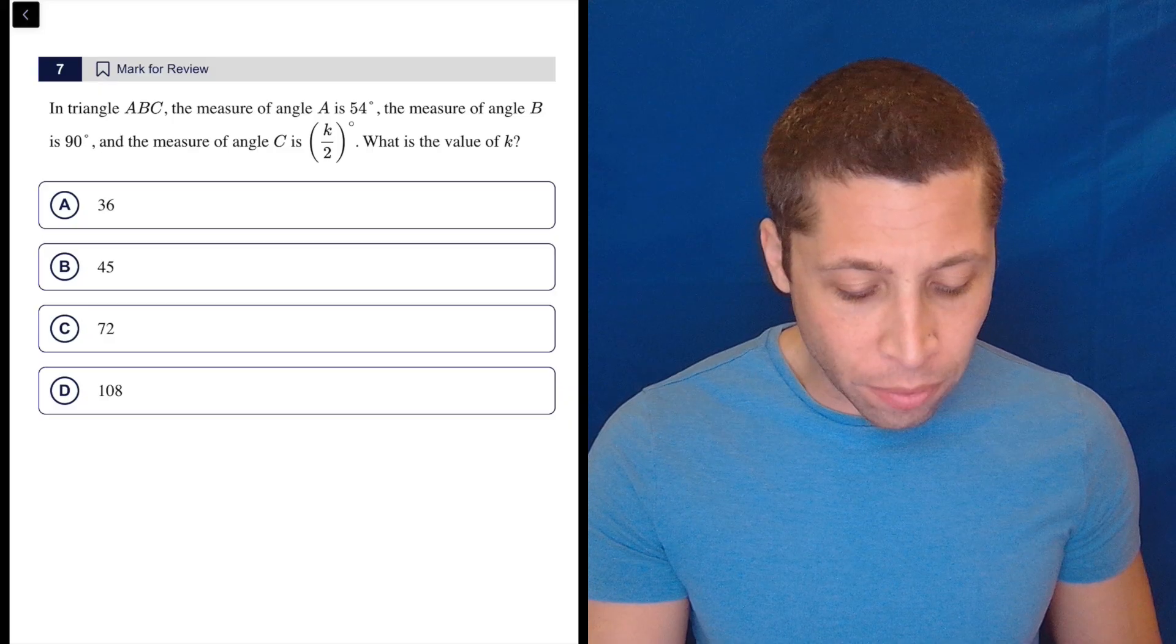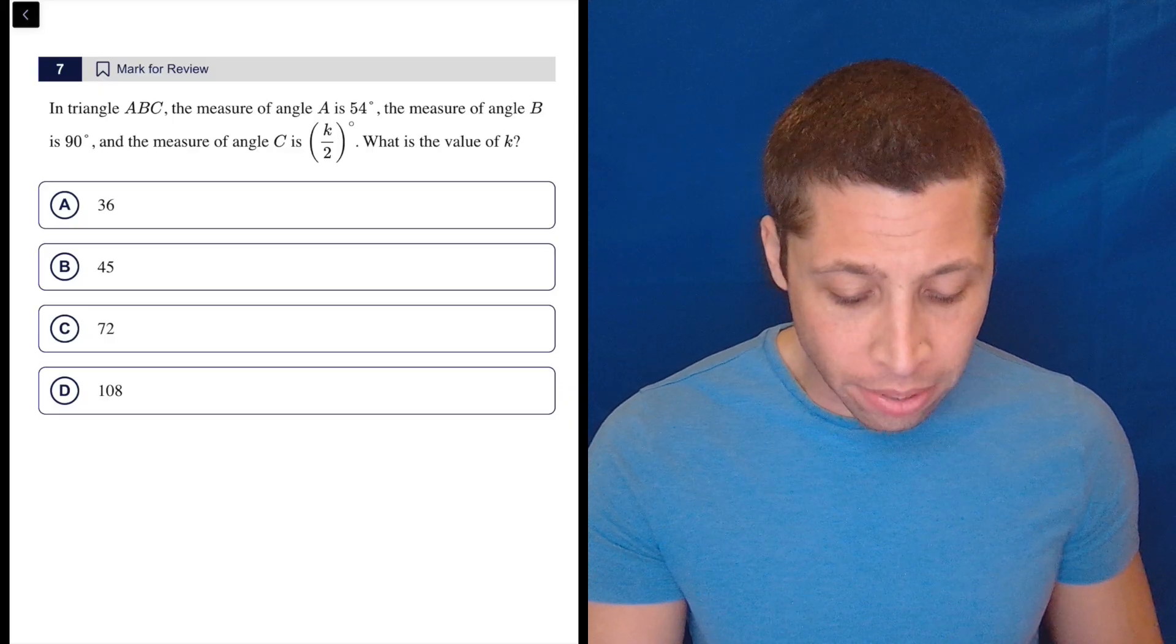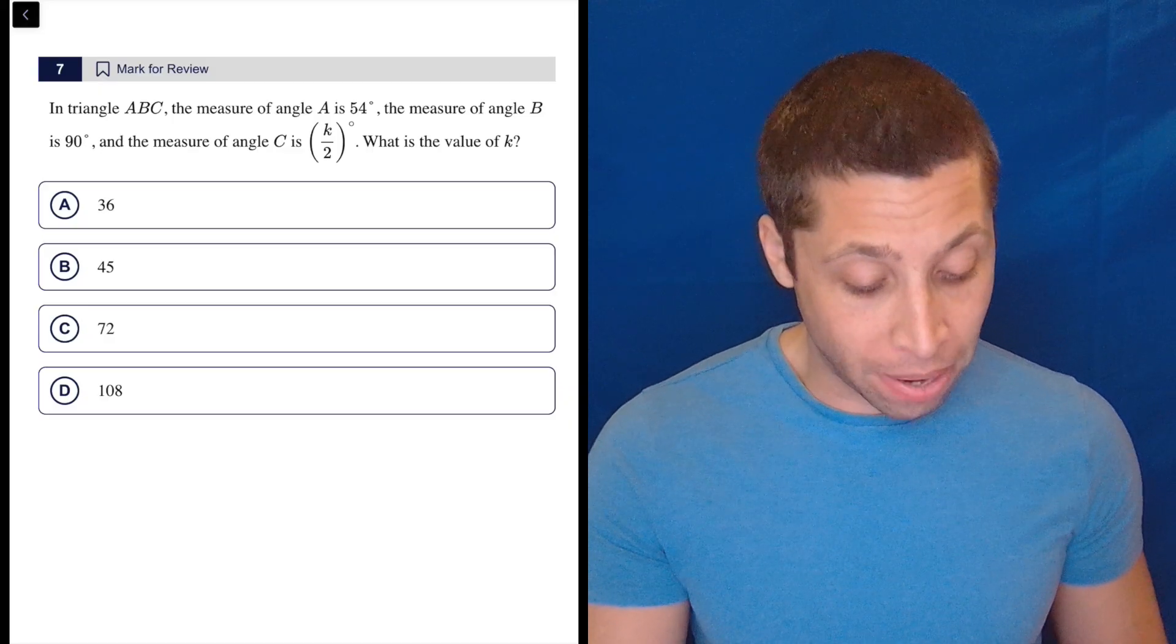In triangle ABC, the measure of angle A is 54 degrees, the measure of angle B is 90 degrees, and the measure of angle C is K over 2 degrees. What is the value of K?